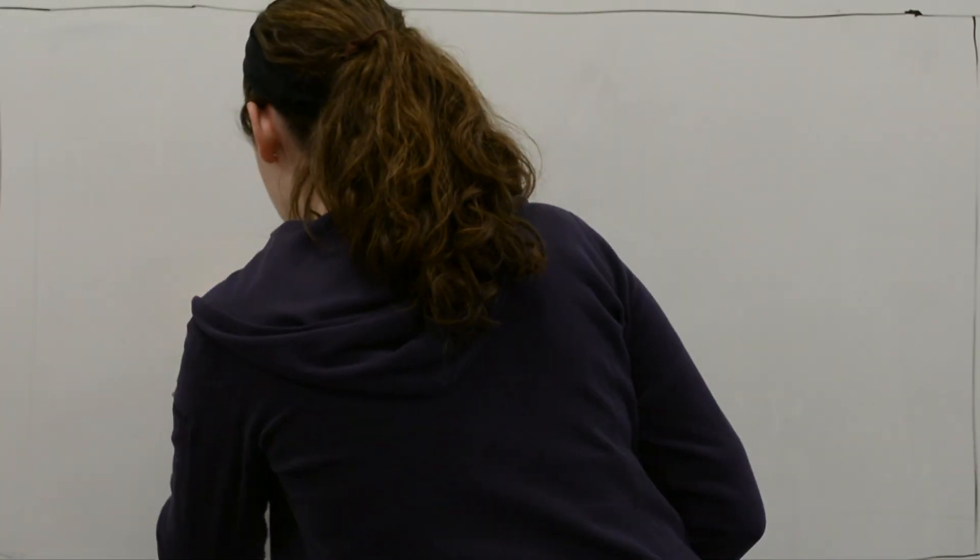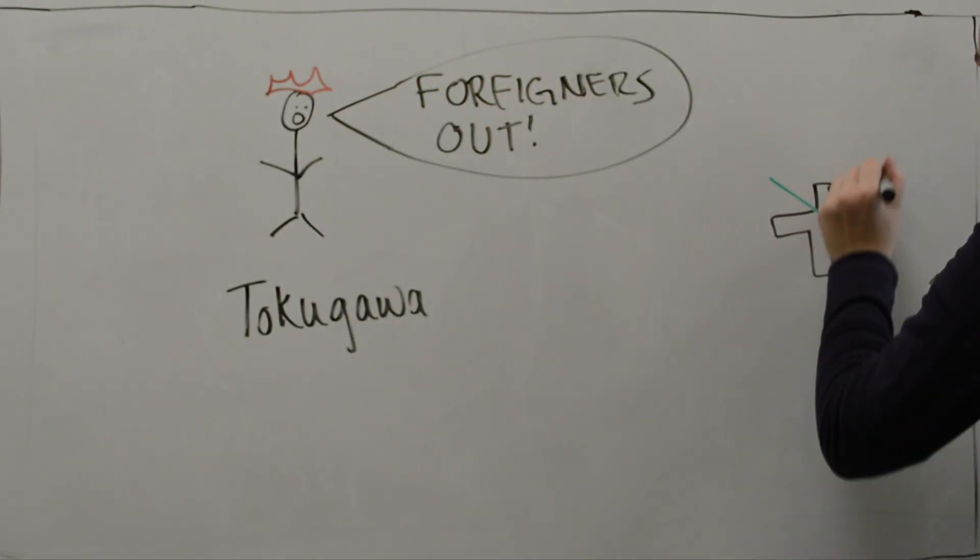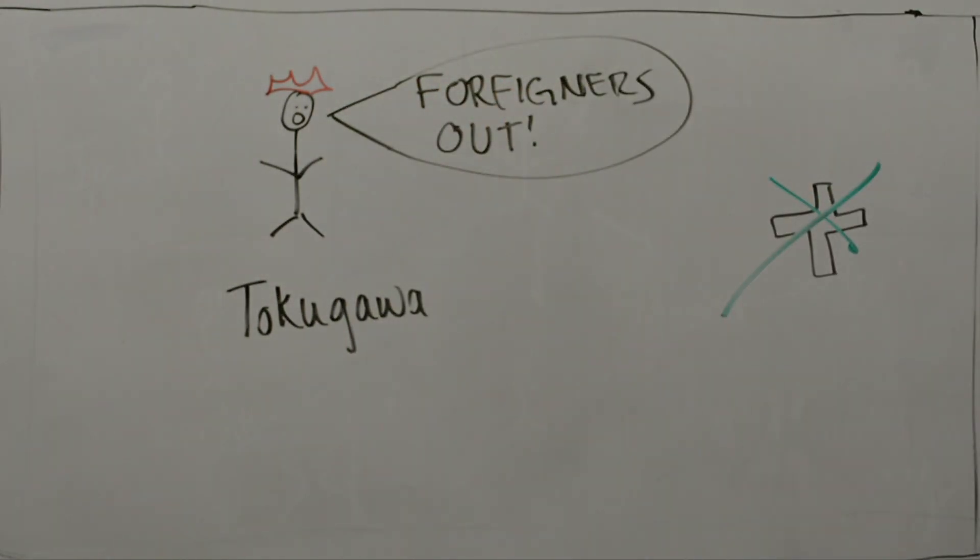The ruling family, the Tokugawa, began in 1603. In the 1630s, reacting to the spread of Christianity, they began implementing something called Sokoku, which expelled all foreign countries except China and Holland.